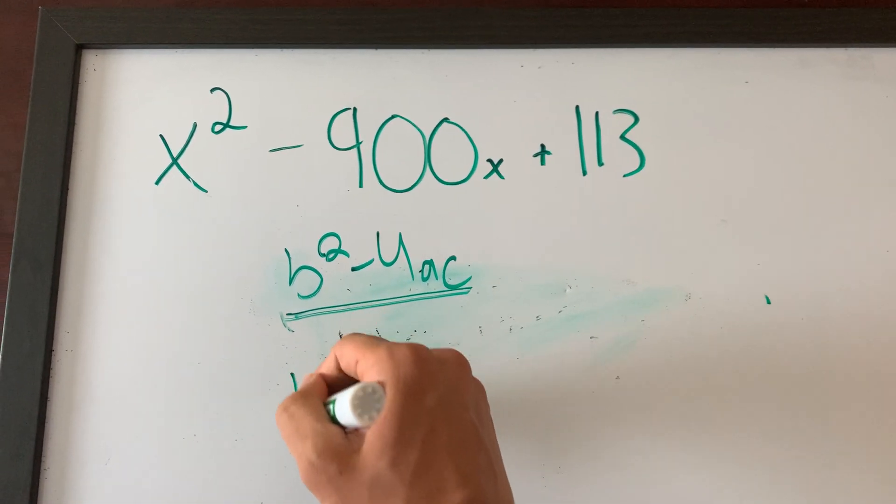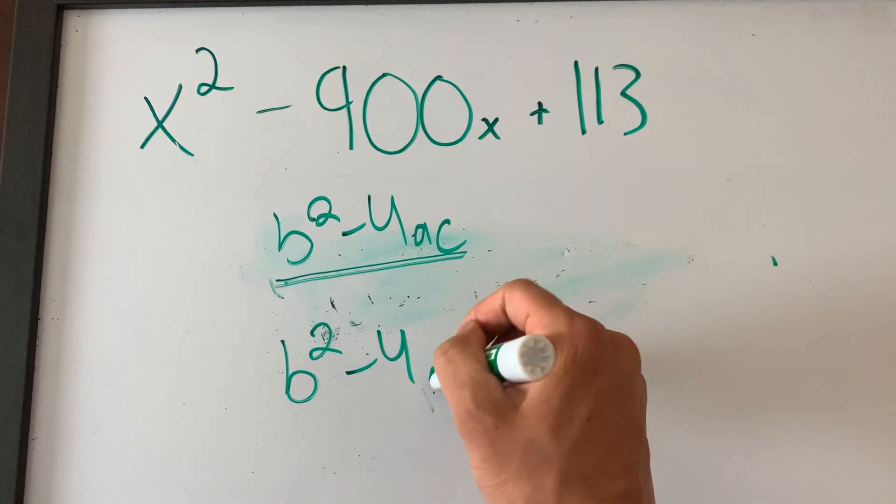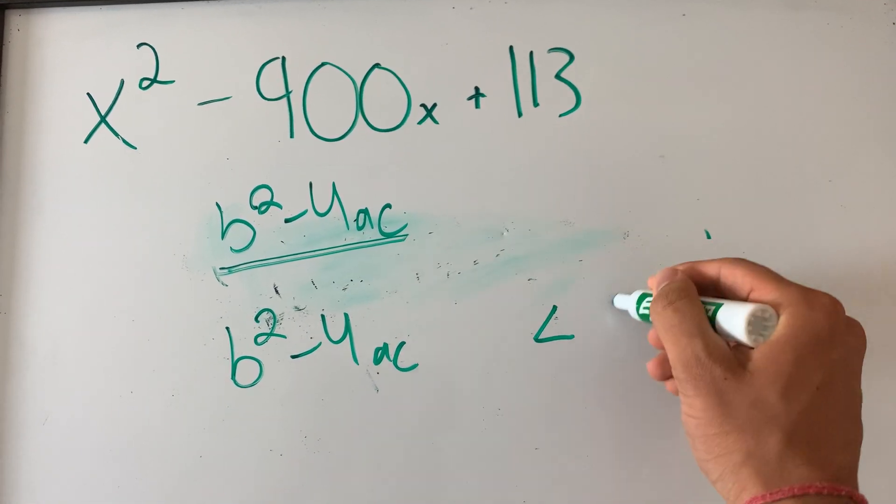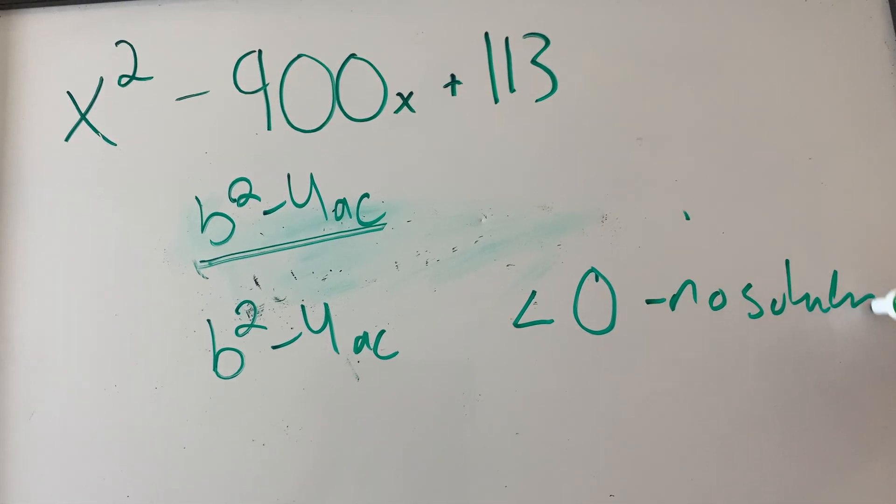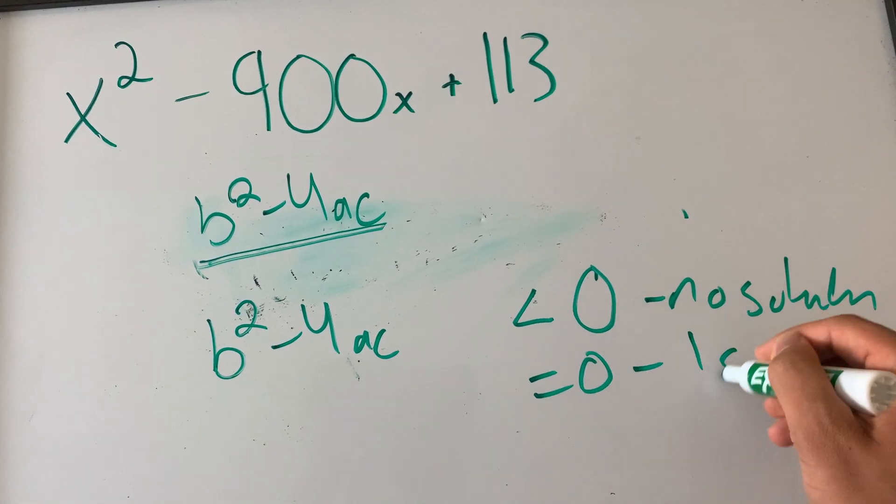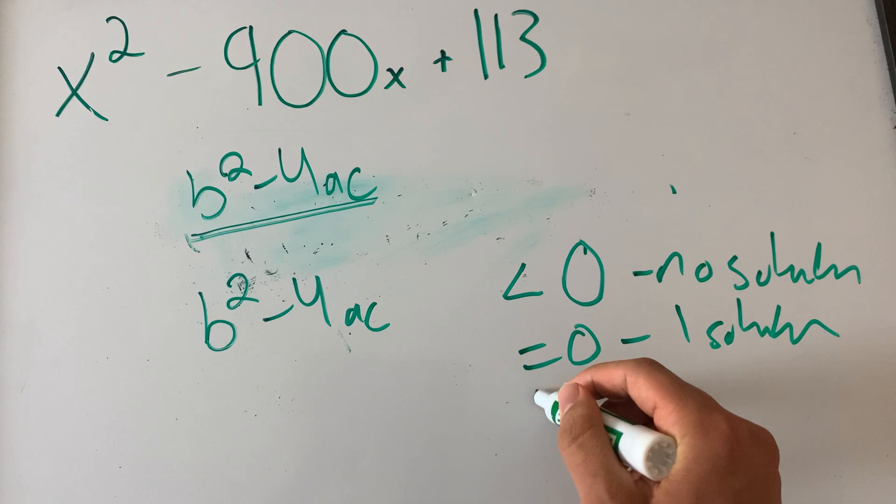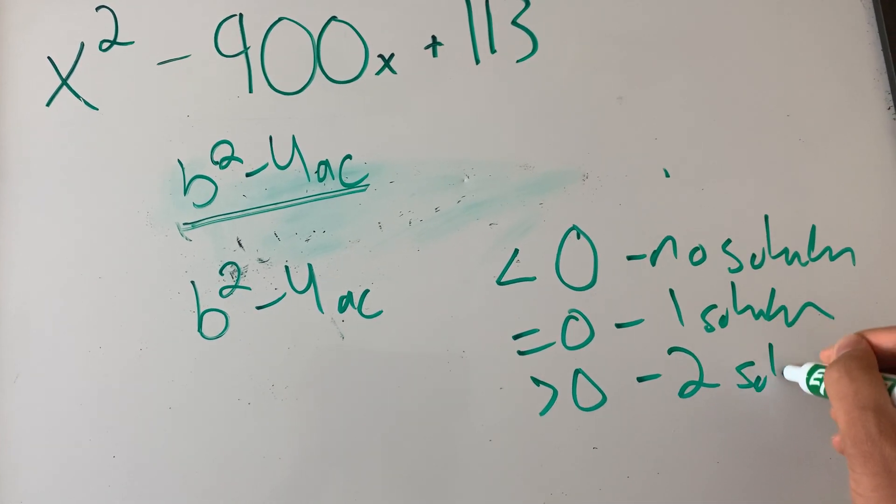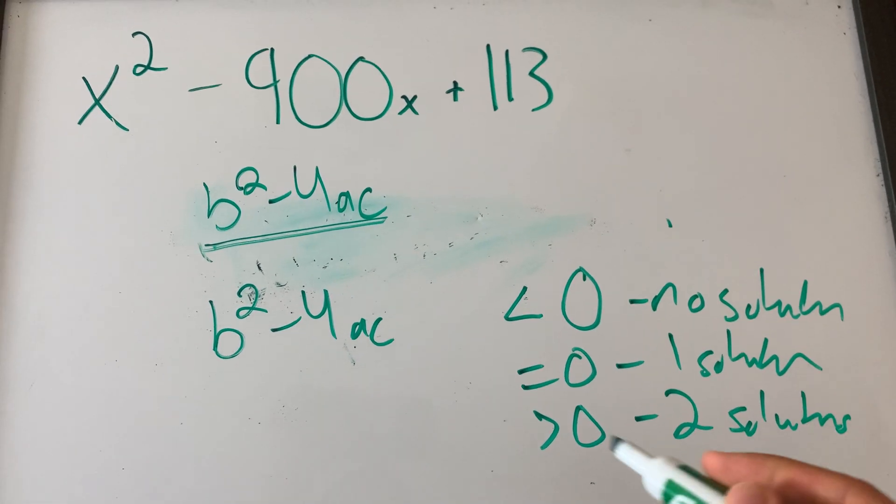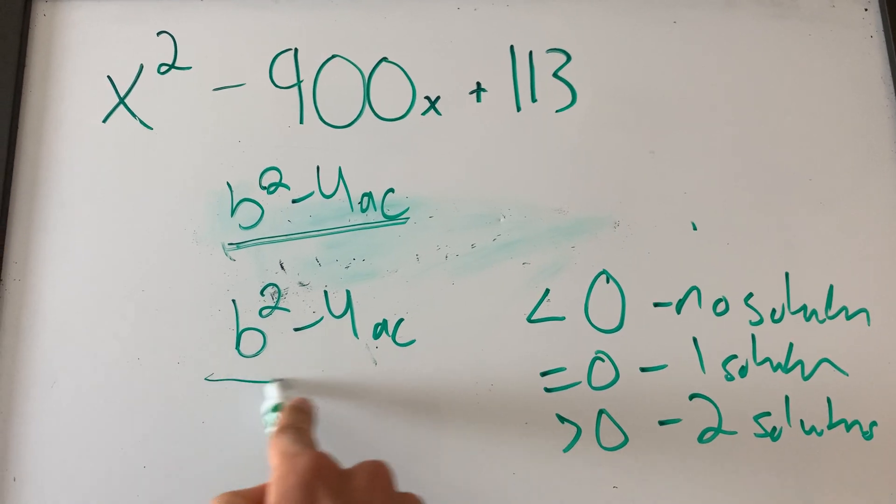If you take this value, B squared minus 4ac. If it's less than 0, this means no solution. If it's equal to 0, it means one solution. If it's greater than 0, two solutions. So, all you have to do is find the value of this.